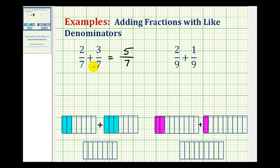If we take a look at a model for this addition problem, we can see why the denominator should not change. If this large rectangle represents 1, this would be the model for 2/7. This would be the model for 3/7.